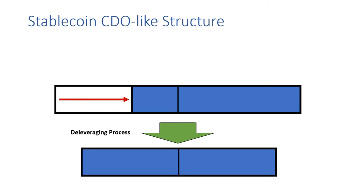There's additionally a deleveraging process, which essentially says that if there's a large enough loss borne by this system, then the system is automatically deleveraged and scaled down so that there's still enough extra room for protection for the stablecoin to be essentially a perpetual product.